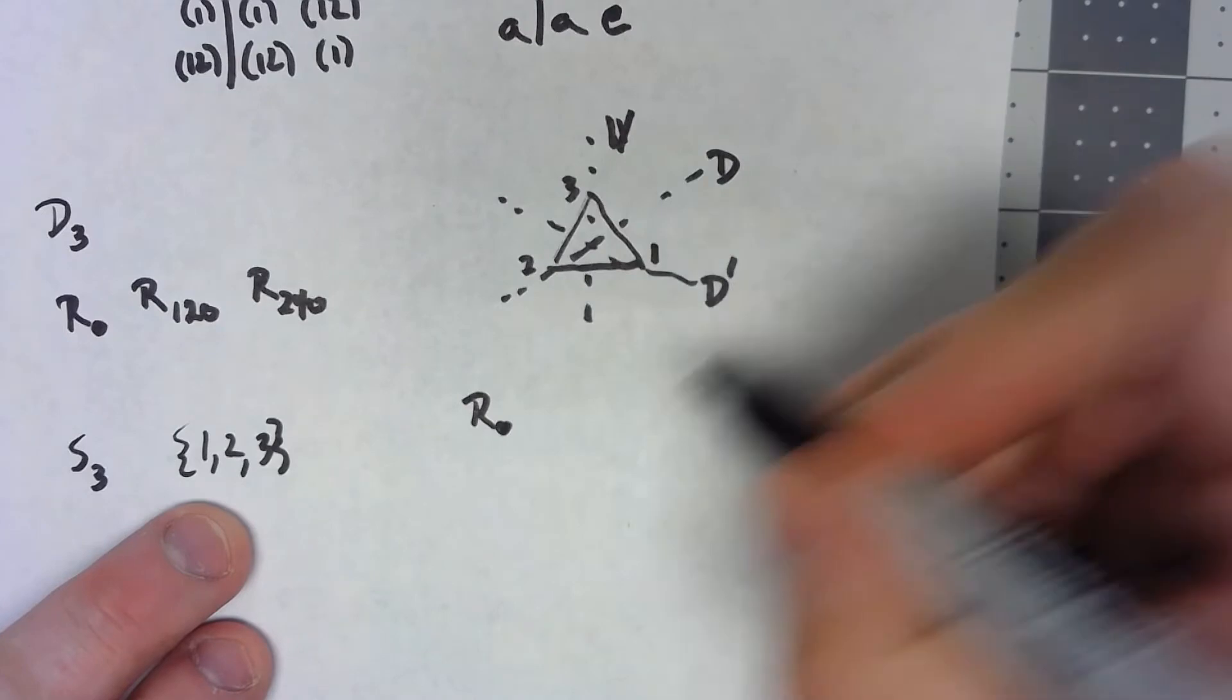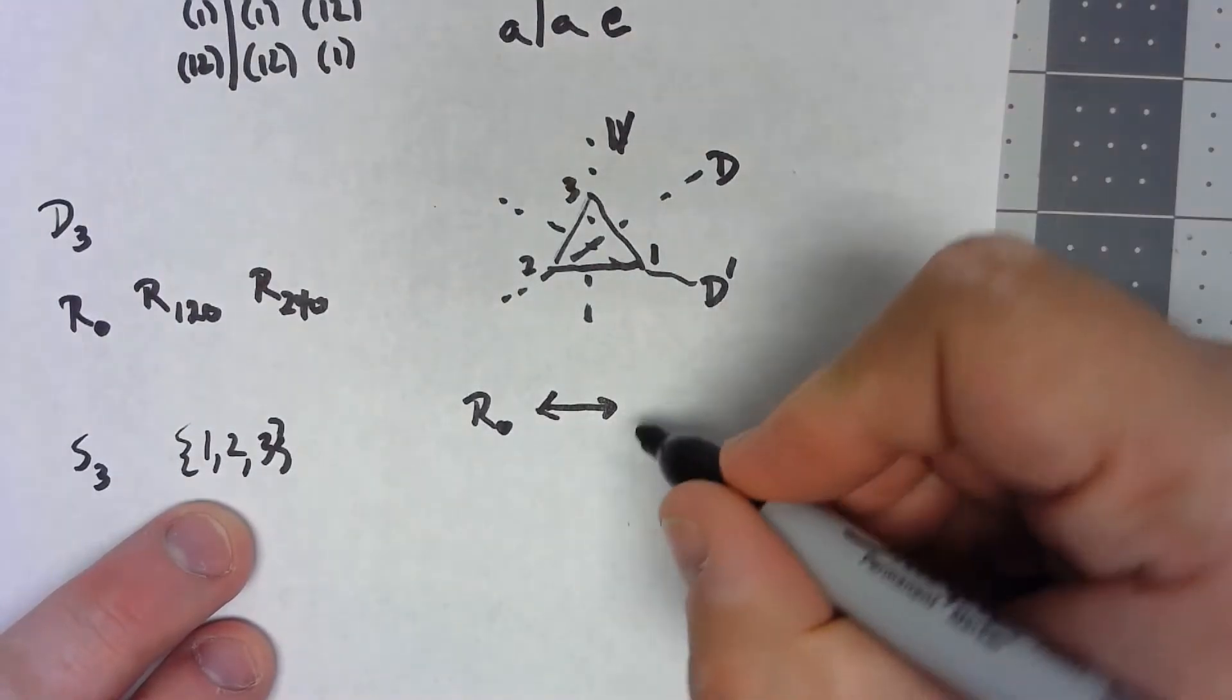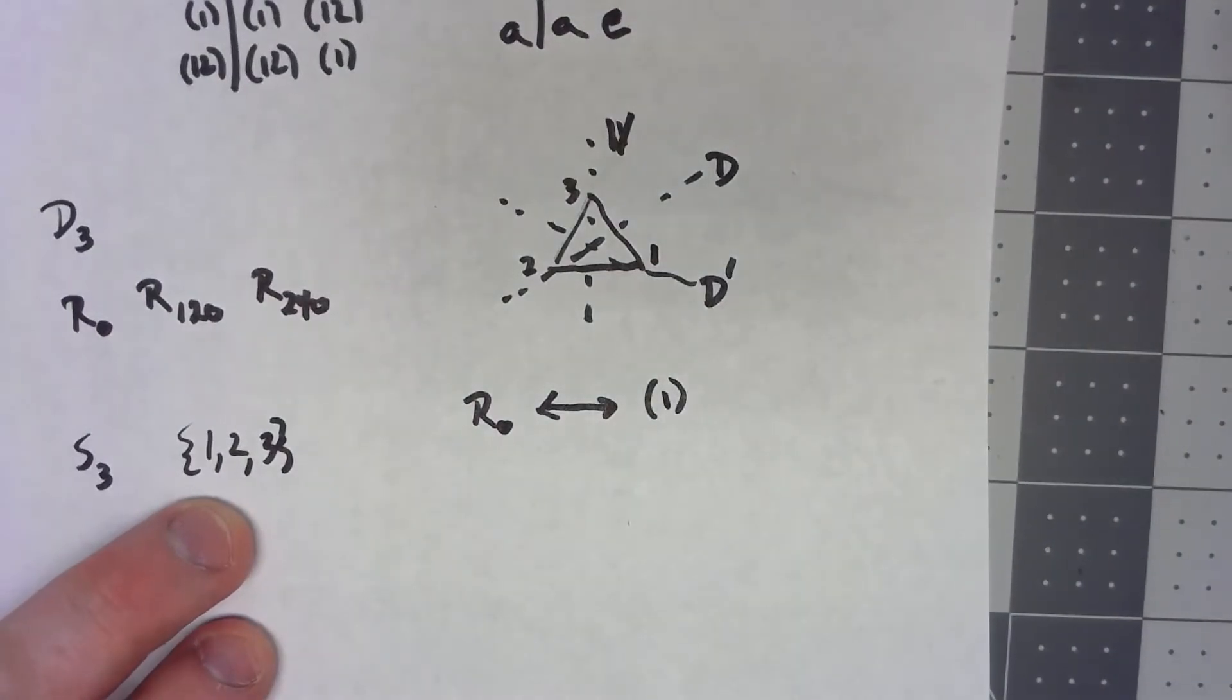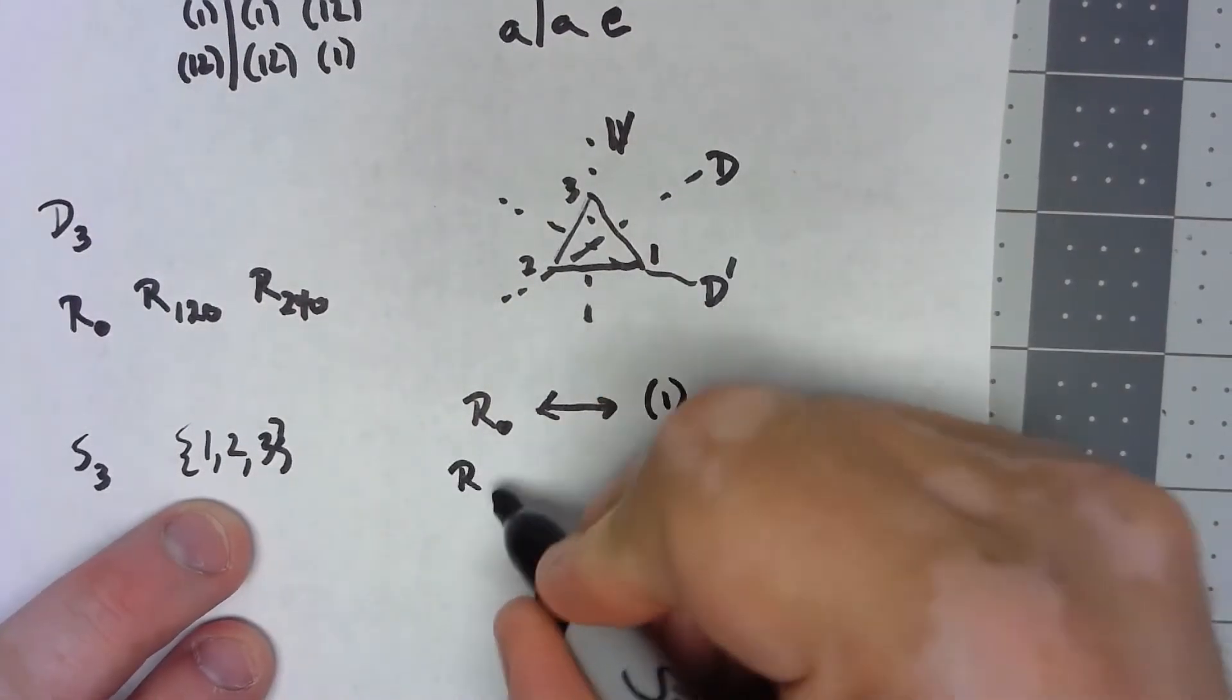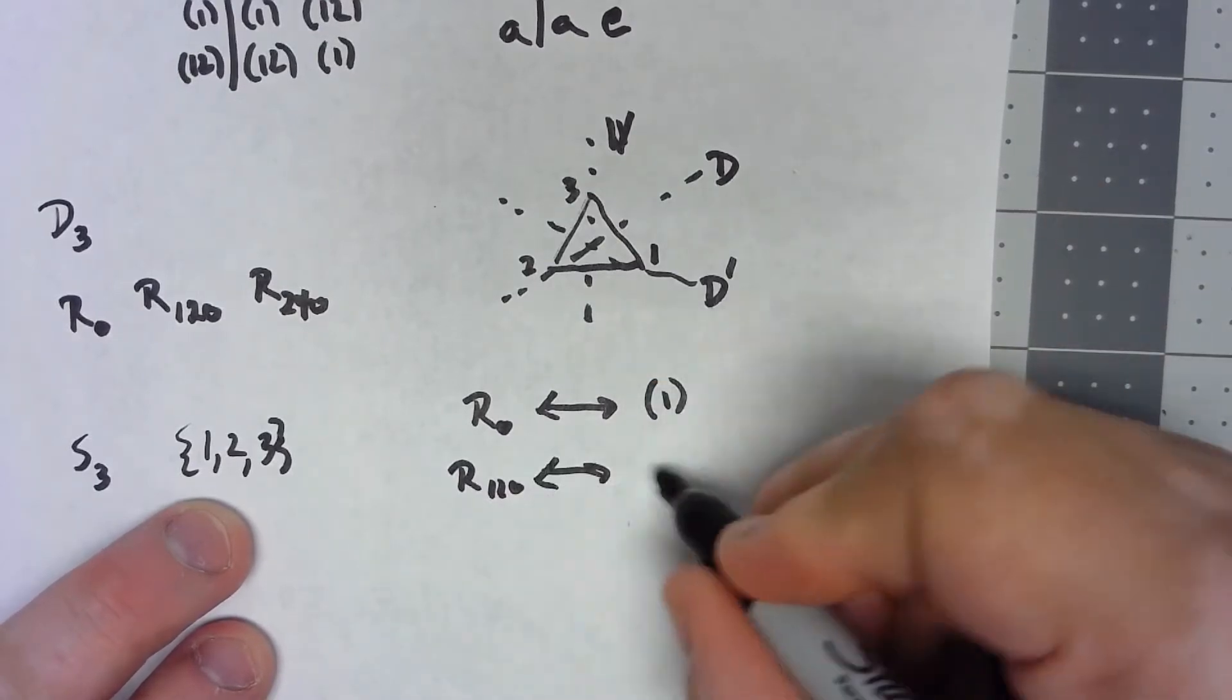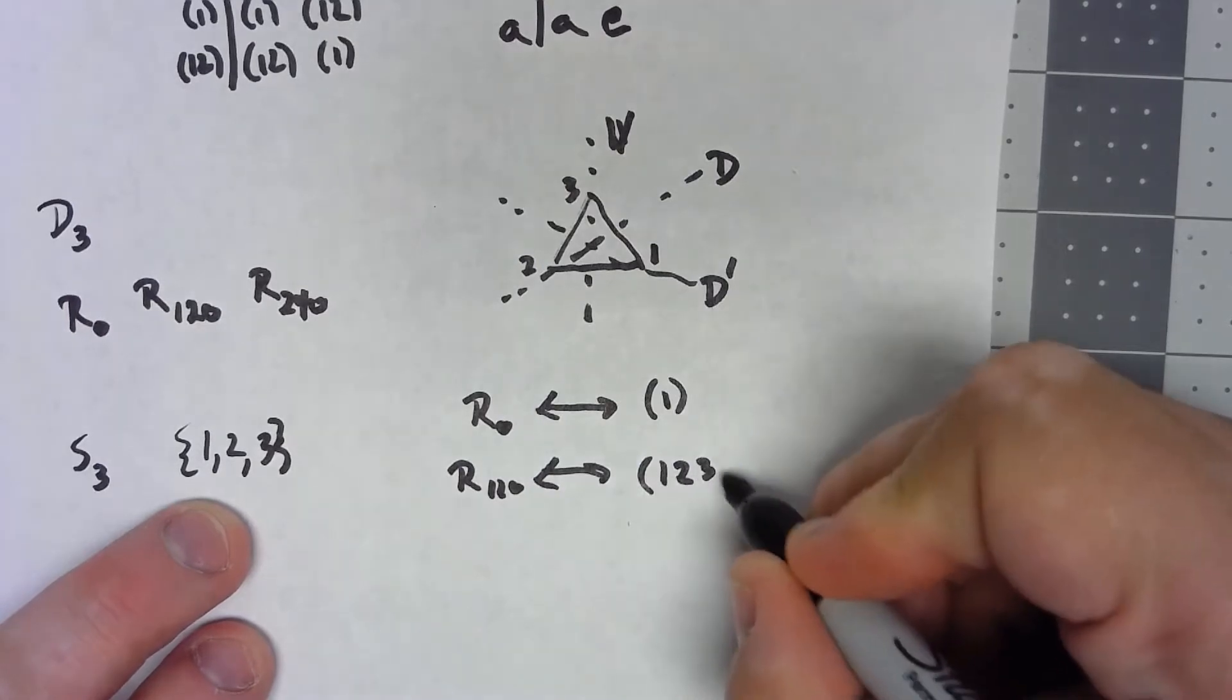R0 is just basically the same thing as the identity. I'll use the same notation as up there, I'll just say as a one cycle so it doesn't do anything. R120 is effectively the same as saying 1 goes to 2, 2 goes to 3, 3 goes to 1.